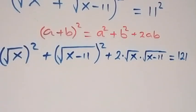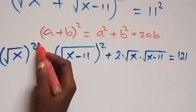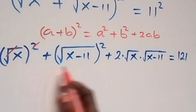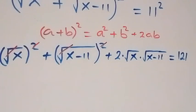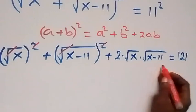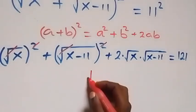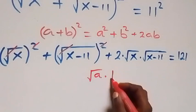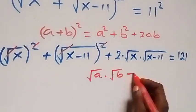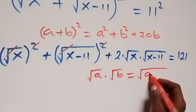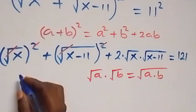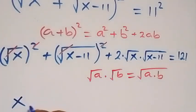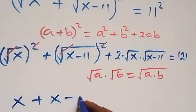From here, we have the square cancel the square root, so we are left with x. Also, square cancels square root, and we are left with x minus 11. Then from here, we can write this using root a times root b, which is the same as root of a times b together. So what we have then becomes x plus x minus 11.